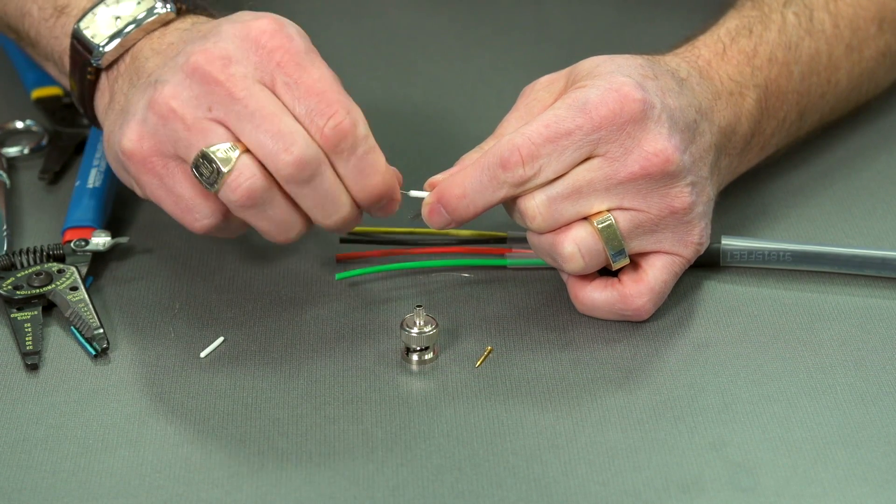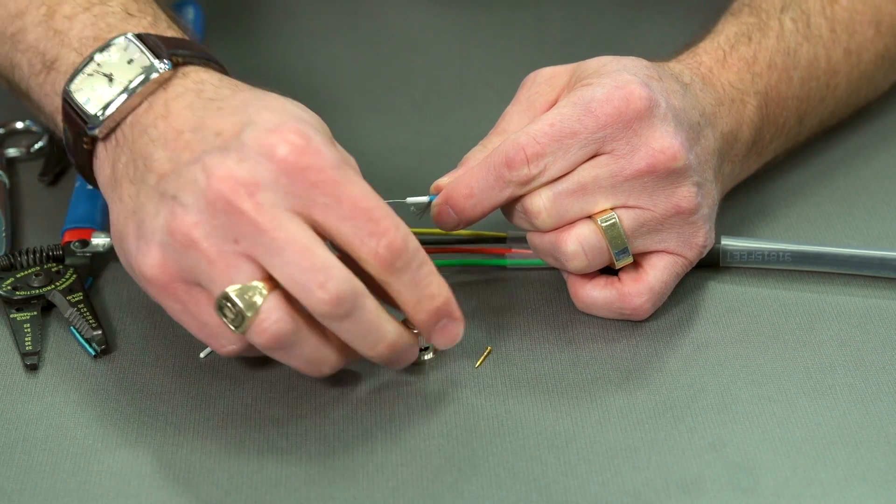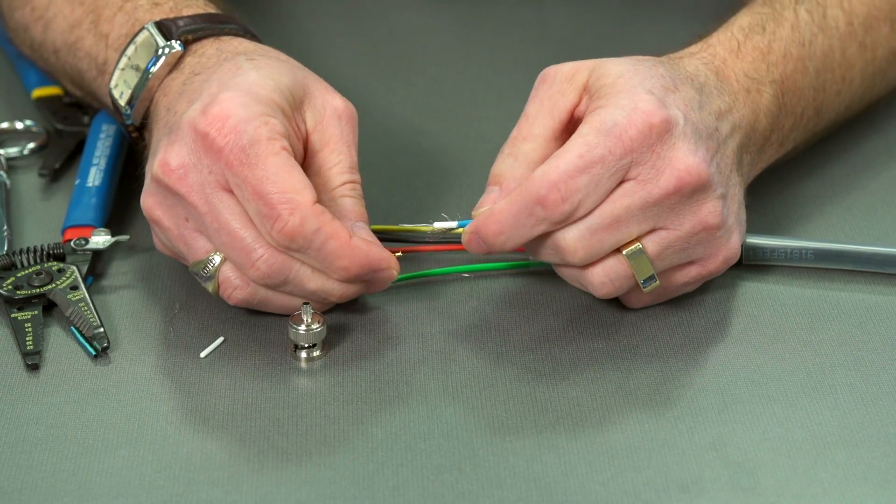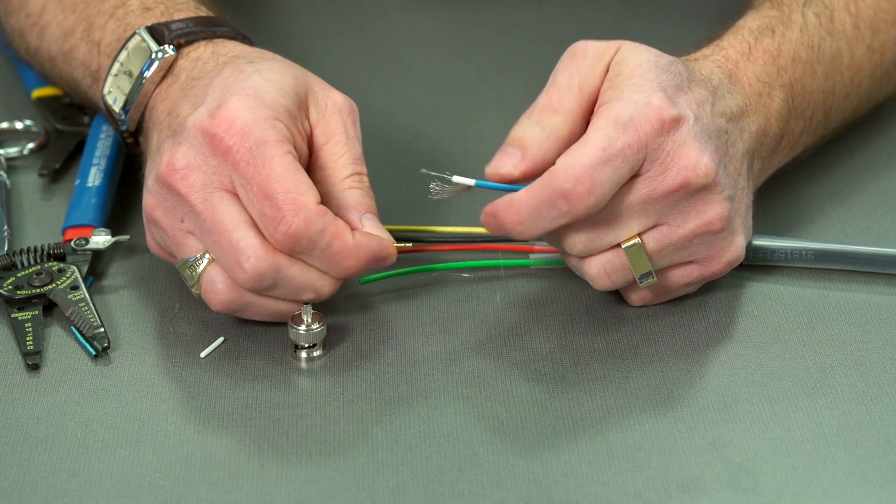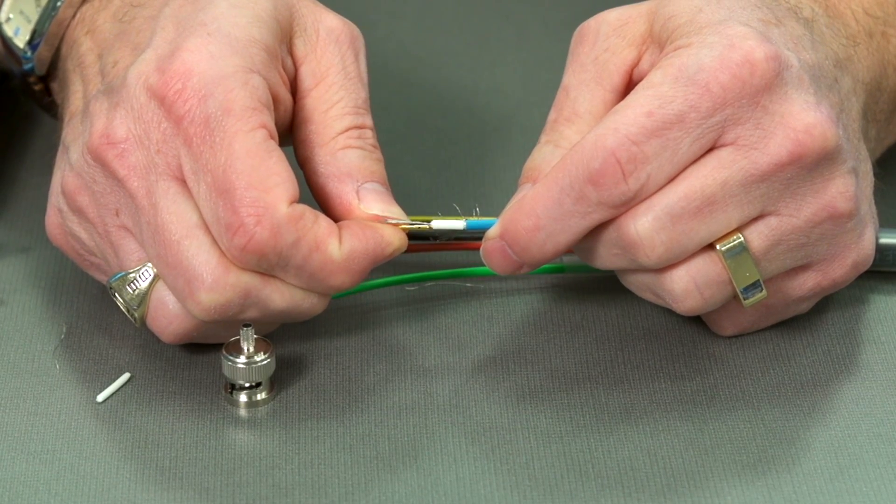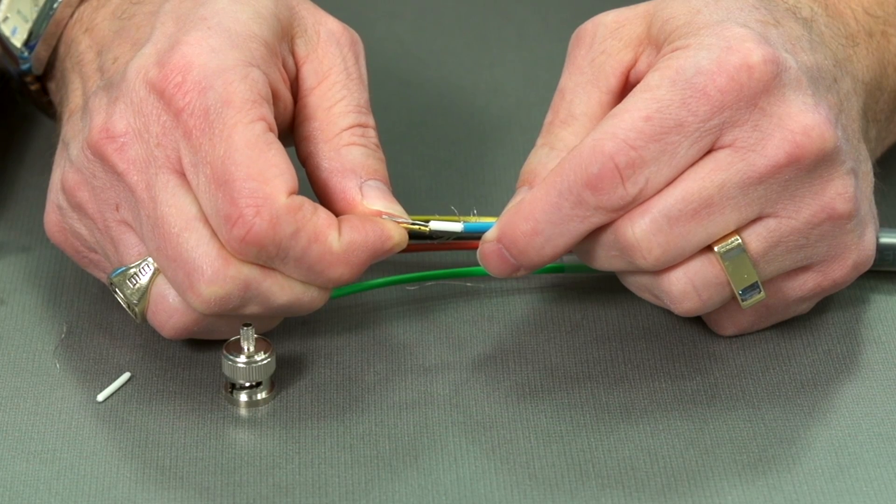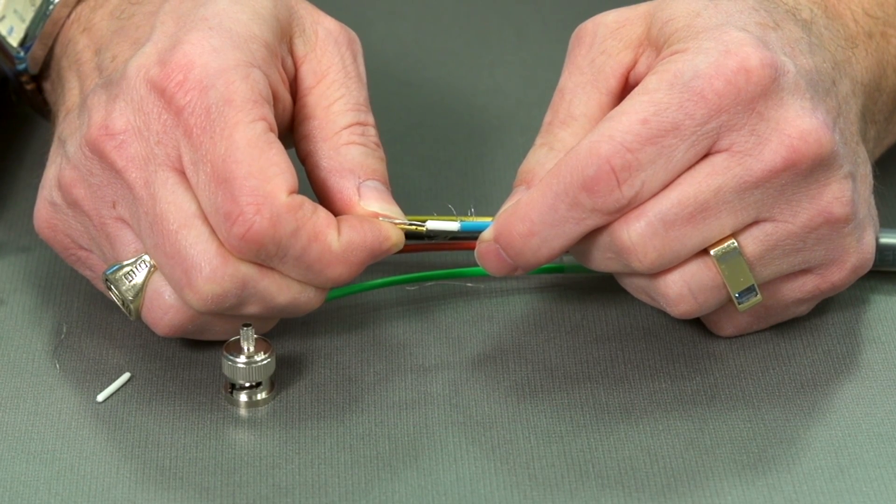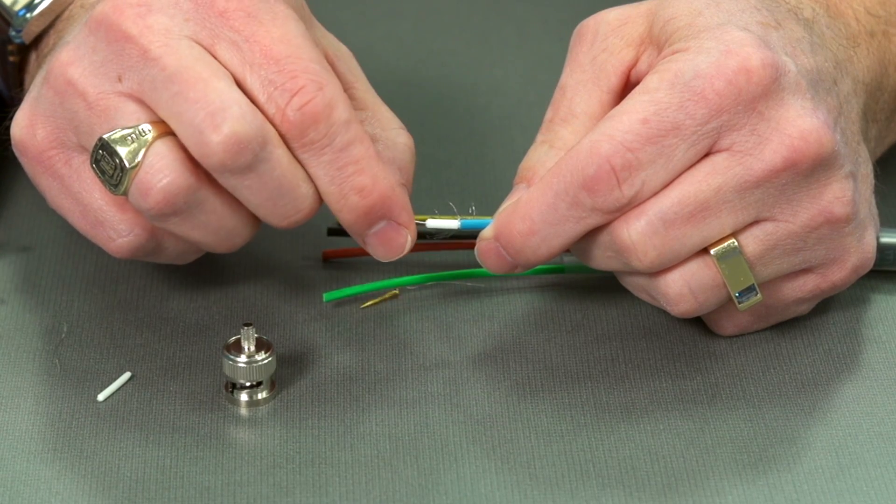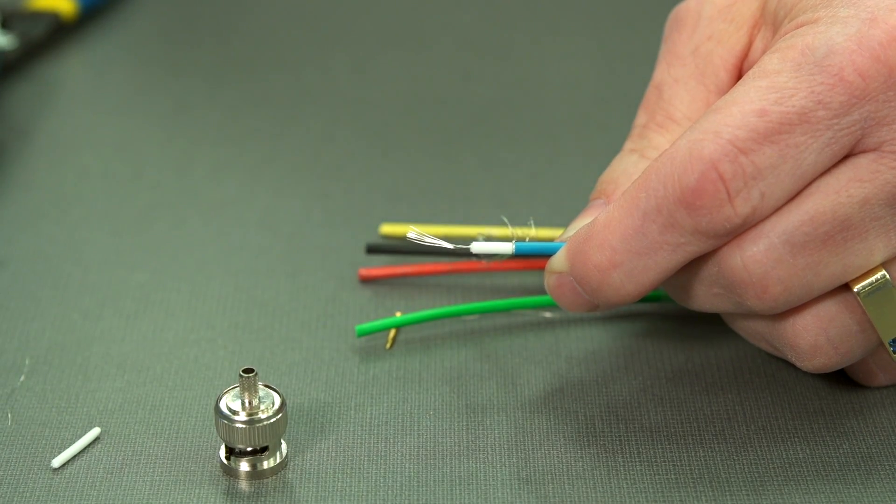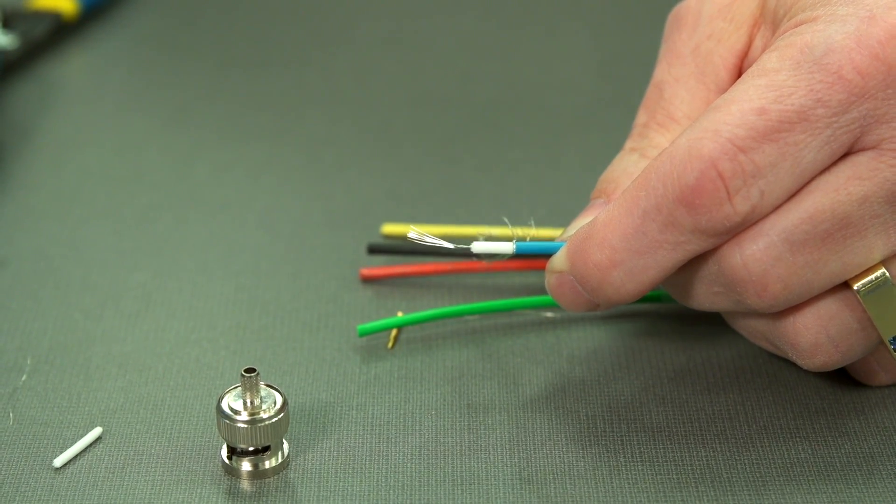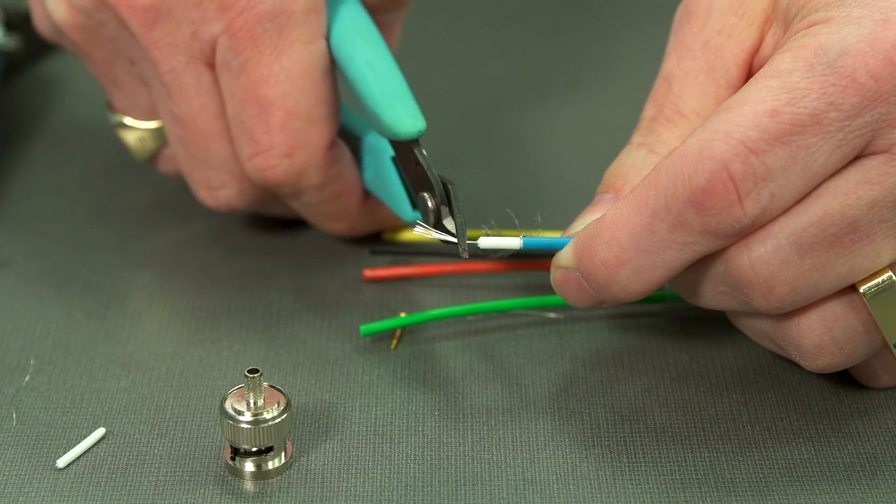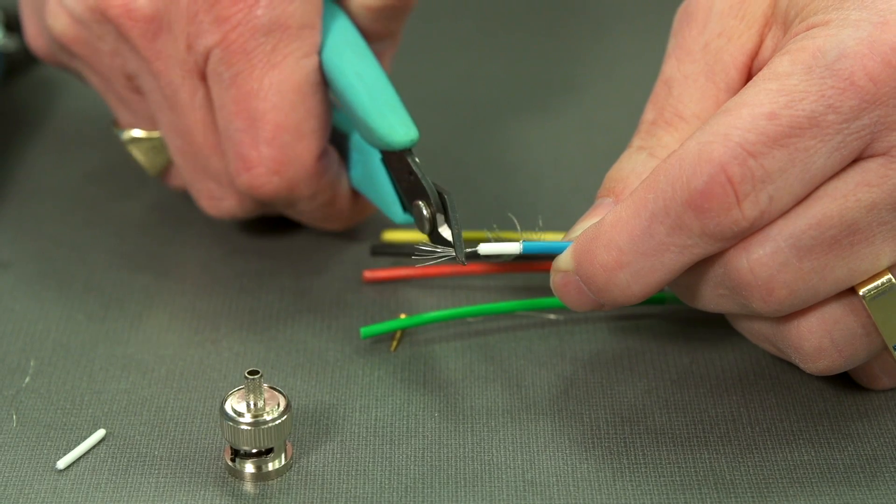And now we need to find the right place to cut this. And this is the difficult part, is that we're going to try to get this so that that wire goes in the hole in the center, and we can still see it in the window. And we need to cut it right about here. So I'll use my cutters. Cut that right there.